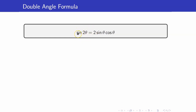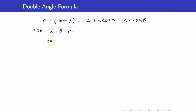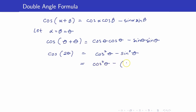Let us now find a counterpart of this for cosine. Let us recall our sum identity for cosine. Just like what we did earlier, we take alpha and beta to be the same angle theta. So this becomes cosine theta cosine theta minus sine theta sine theta. On the left-hand side, this is cosine of 2 theta, equal to cosine squared theta minus sine squared theta. If we want to express it in terms of cosine only, we write sine squared theta as 1 minus cosine squared theta — that is from our Pythagorean identity — and this becomes 2 cosine squared theta minus 1.